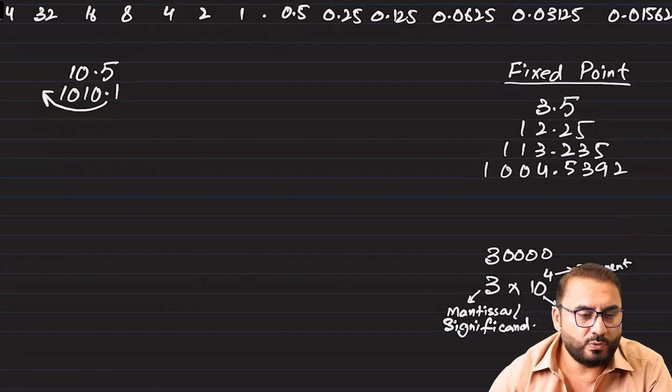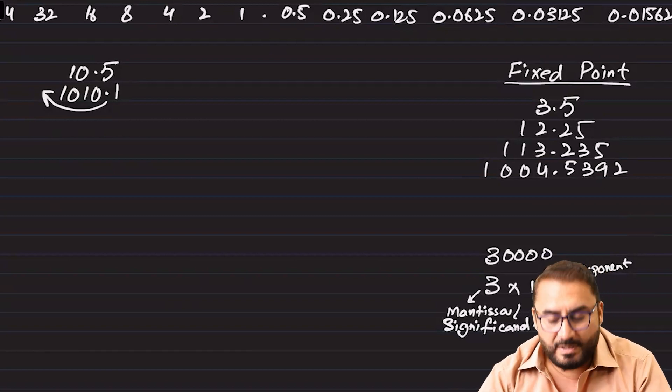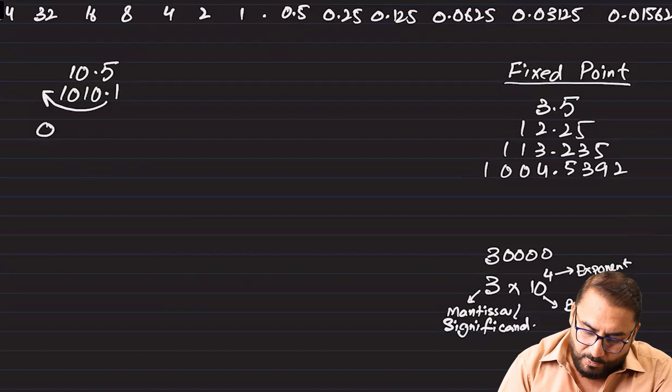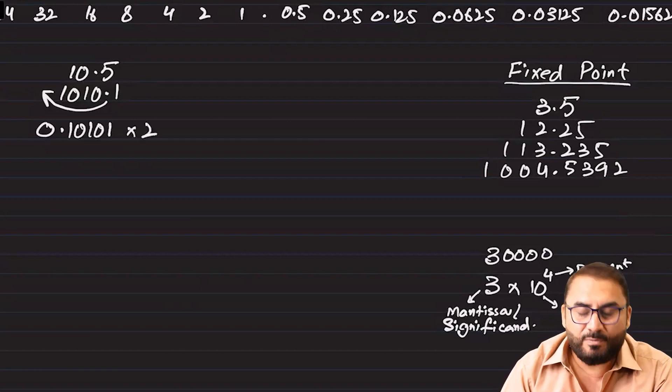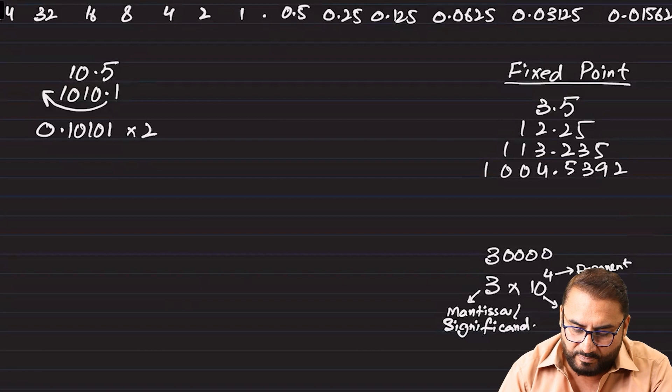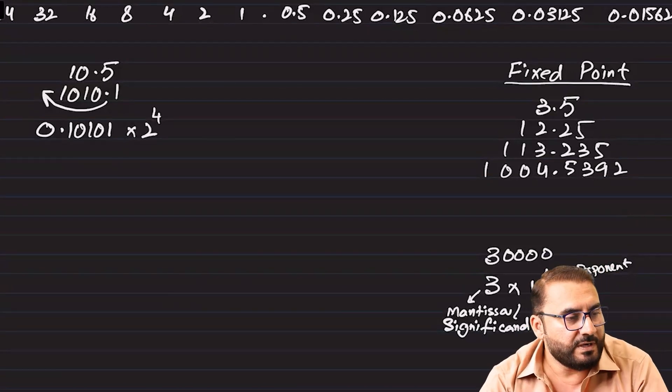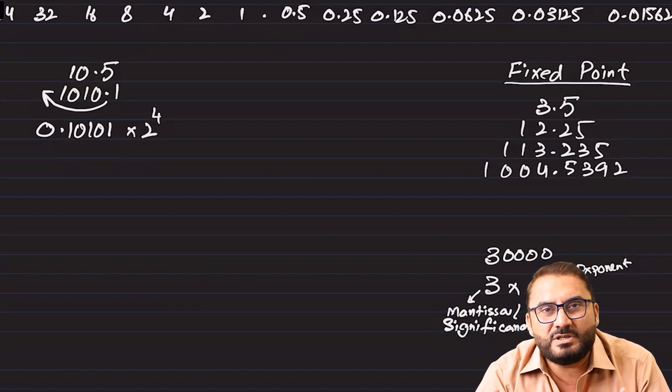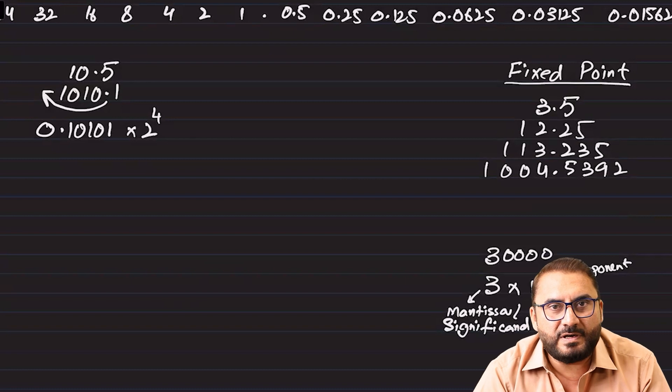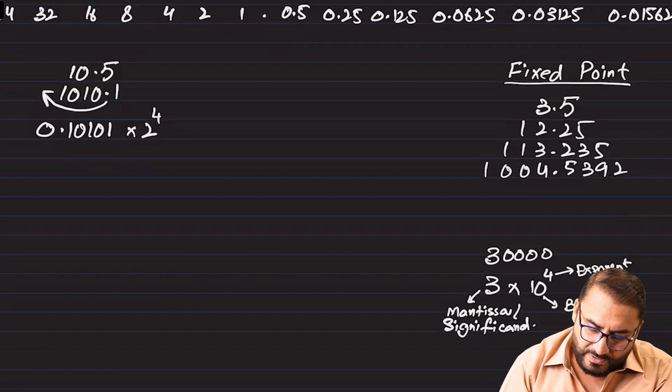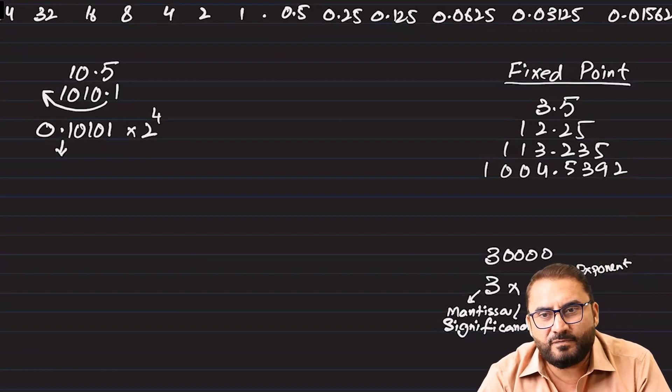So we float it out to make sure that point always lies between first two bits. So 0.10101 into 2 to power, how many points we have floated it out? How many steps we have floated out? 4. So this is basically now the form it takes in binary standard form, basically it is called general form. So now you can see that point lies between first two bits. Computer does not save the point as it is now known that the point is between first two bits.